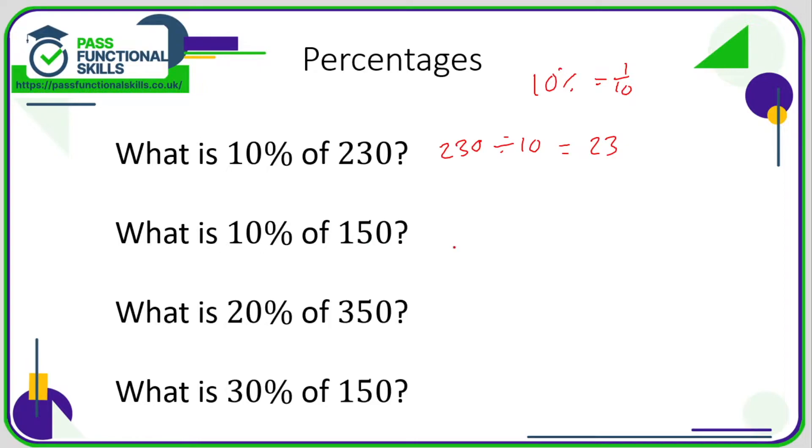So 10% of 150 is 15. For 20%, we're going to work out 10% first. 10% of 350 is 35. Now, 20% is double 10%, so we need to double the 35, so 20% is 70.